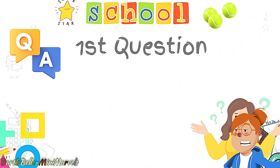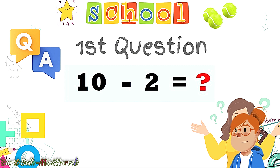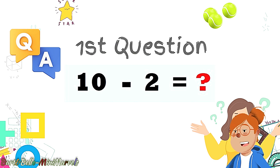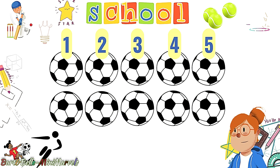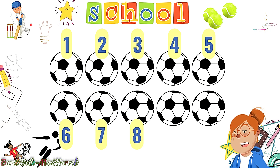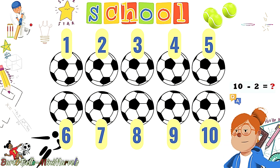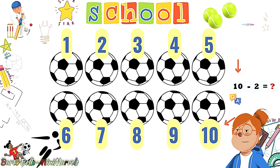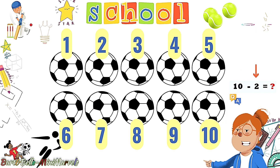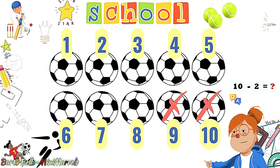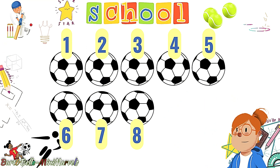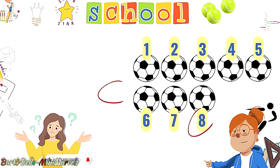Our first question is 10 subtract 2. What should be the answer? In this question, we will subtract 2 from 10 and we will get the answer. To solve the question, let's put 10 footballs on the screen. The 10 from the question determines the total number of footballs, and this 2 is showing the number we have to kick away to get the answer. We will simply kick only 2 footballs. Let's do this! Yes! This way.